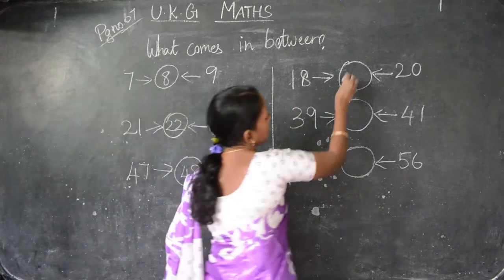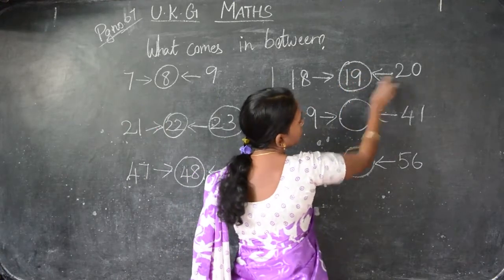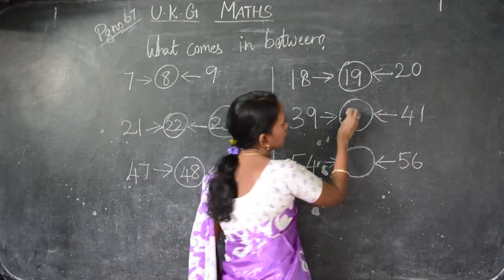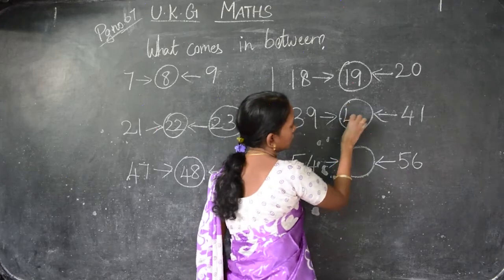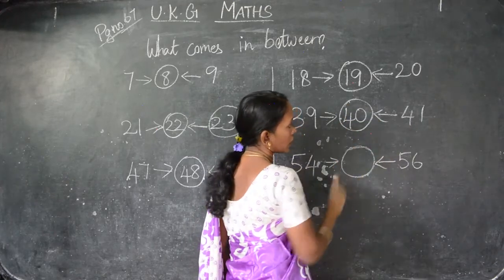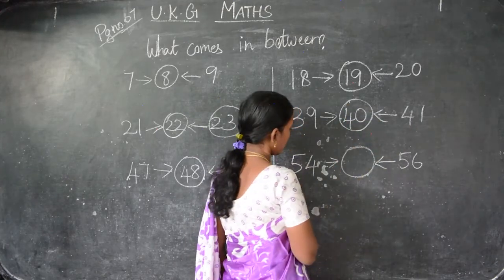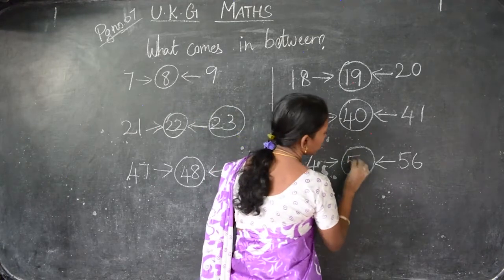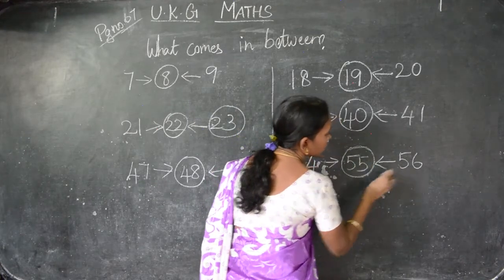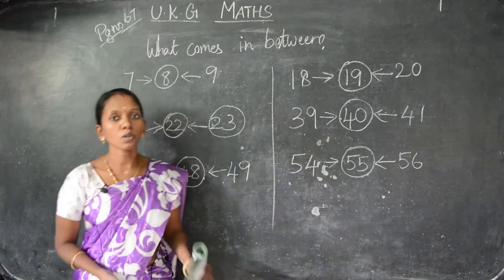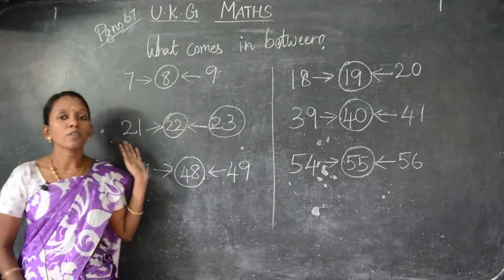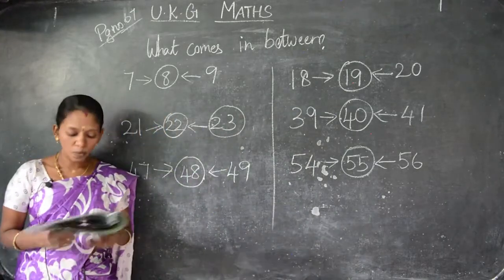After 18 is 19, before 20 is 19 only. After 39 is 40, before 41 is 40. After 54 is 55, before 56 is 55 only. So copy it down children, you have to complete this page.